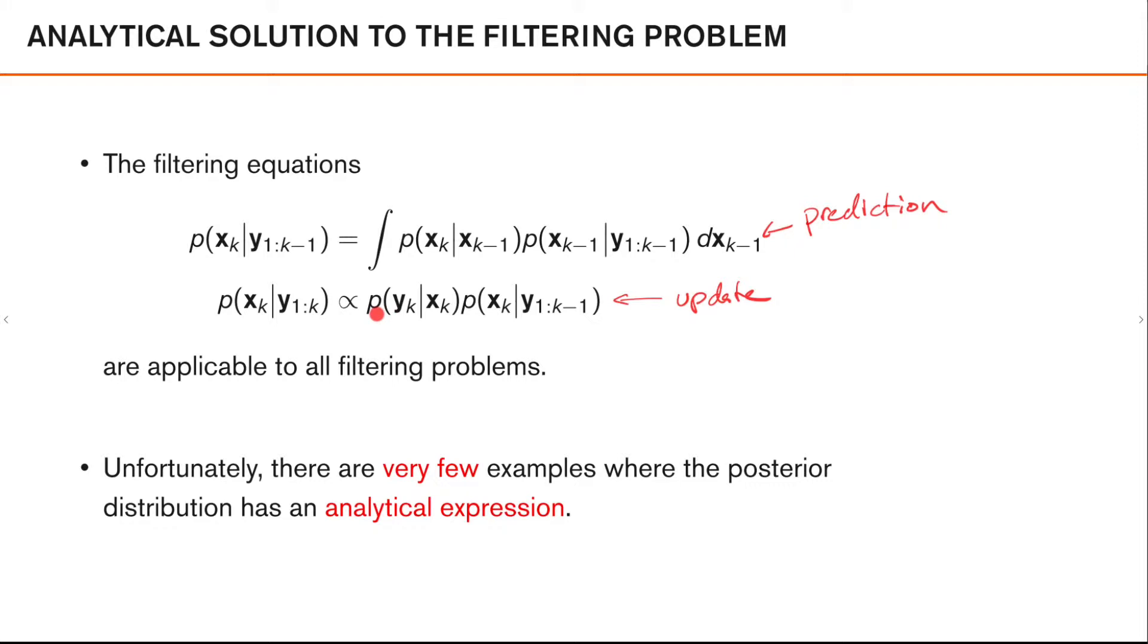We do this by solving the product between the likelihood, expressed like this, and the prior. But the prior in this case is the predicted density that we calculated in the previous step.